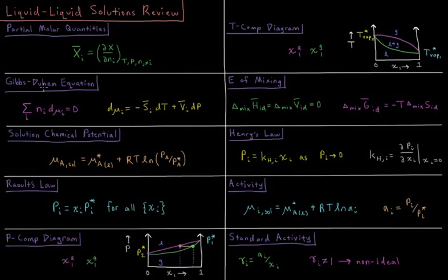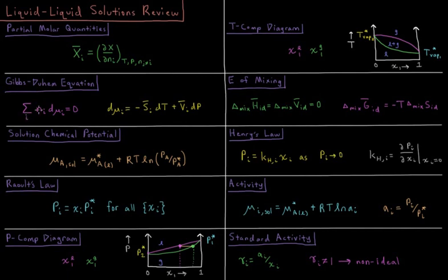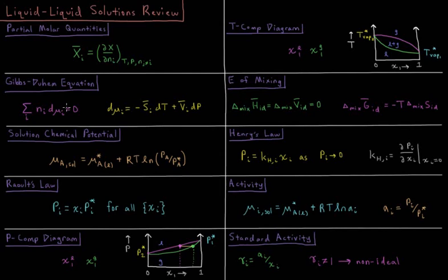We can also have the Gibbs-Duhem equation, which says that the sum over all the substances in a solution is equal to the number of moles of those substances times their change in chemical potential being equal to zero.